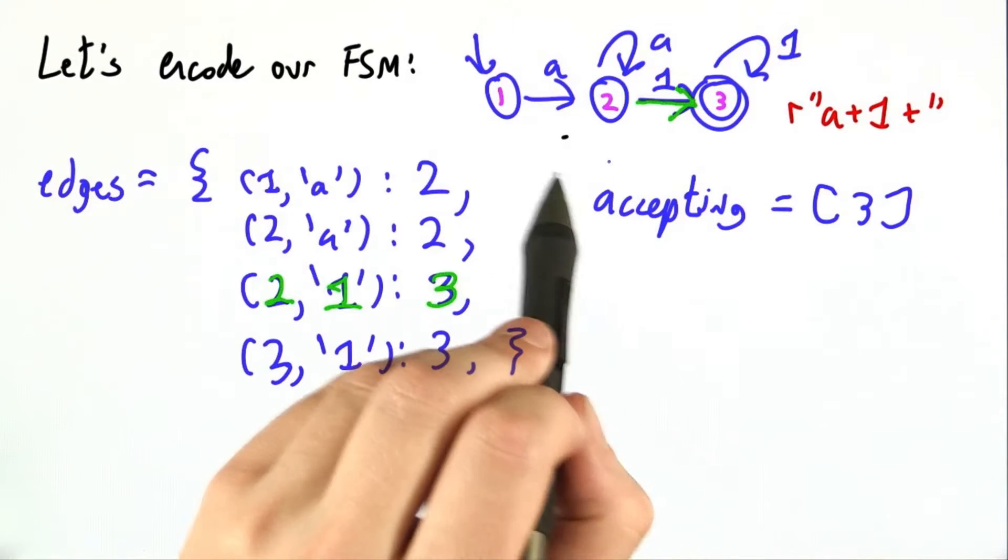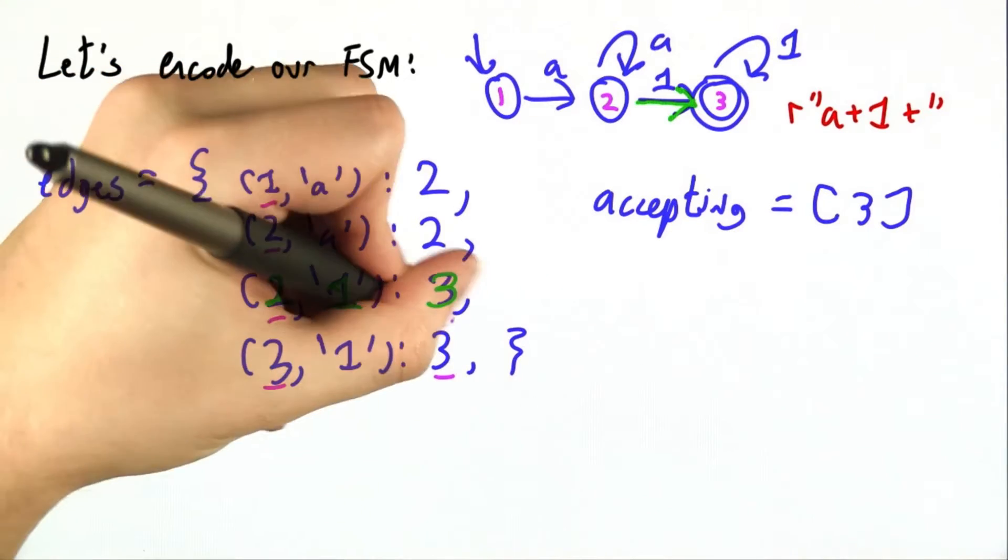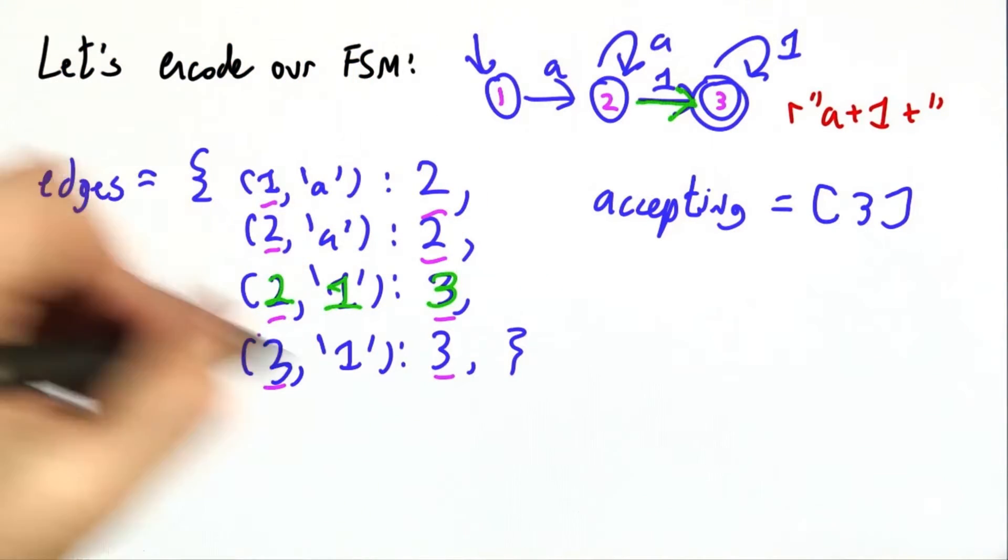You'd think we'd need a list of the nodes, but you're going to see that we're actually able to finesse it because all the nodes we really care about already appear in this edges listing.